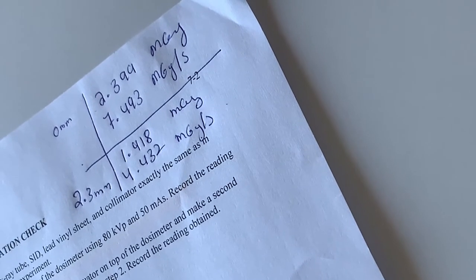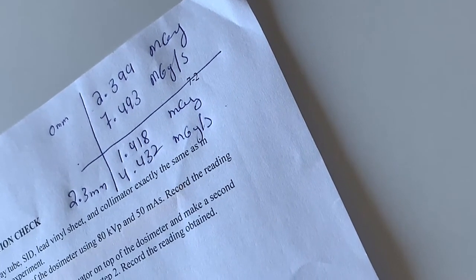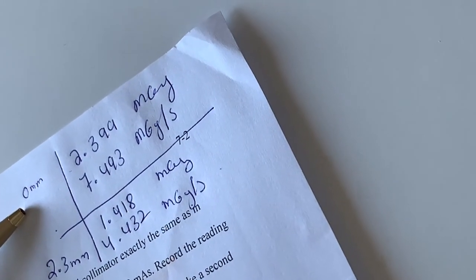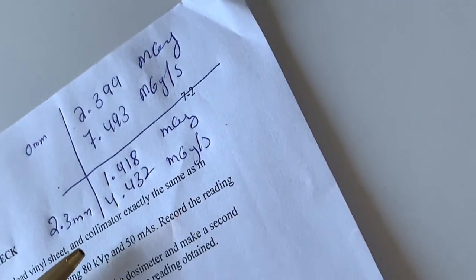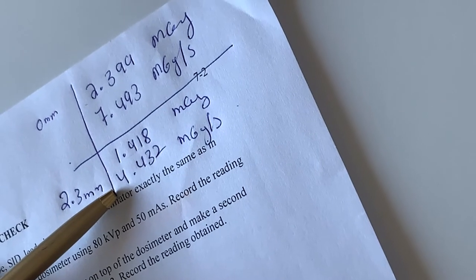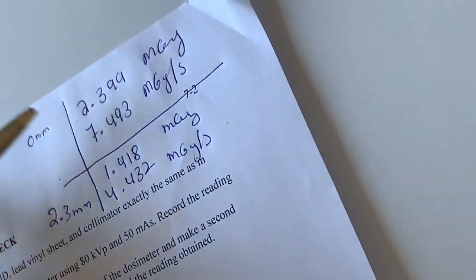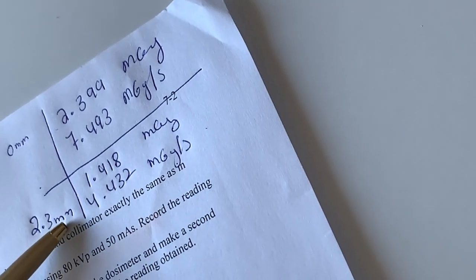Using the readings, we have to determine whether the filtration is sufficient. How do we know if the filtration is sufficient? The zero millimeter, which means no aluminum, should be double the values once the aluminum sheets are placed. So, you can see here that the values have decreased once the aluminum sheet has been placed.